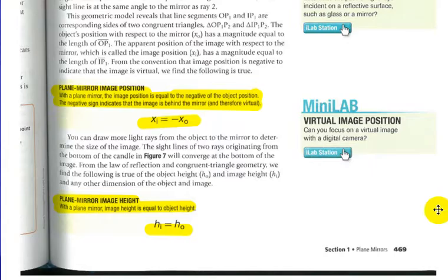You can draw more light rays from the object to the mirror to determine the size of the image. If the sight lines of the two rays are traced from the bottom of the candle, it will converge at the bottom of the image. From the law of reflection and congruent triangle geometry, we can find that if I had an object of a particular height, the object height is also equal to the image height.